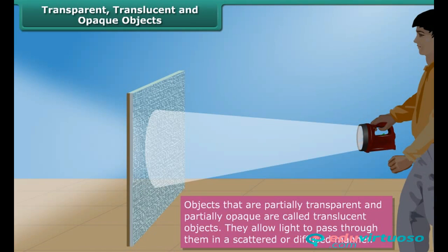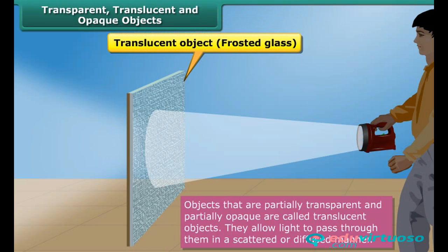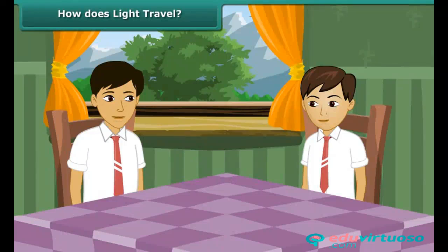Objects that are partially transparent and partially opaque are called translucent objects. They allow light to pass through them in a scattered or diffused manner. Frosted glass, tracing paper, and greased paper are examples of translucent objects.